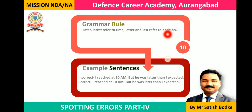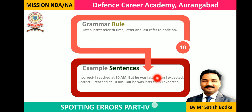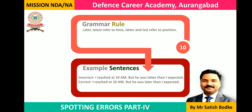In a list, if your position is last, it is showing position — last shows position, not time. Latest shows something recent in time. For example: 'I reached at 10 a.m., but he was latter than I expected' is incorrect here because we are talking about time. We should use the word 'later' instead of 'latter.' The correct sentence is: 'I reached at 10 a.m., but he was later than I expected.'